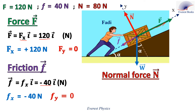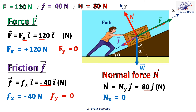Now consider the normal force N. N is oriented along the positive y-axis, so it has no component along the x-axis. Then N can be written as Ny j. The y component of N equals 80 newtons and the x component of N equals 0.